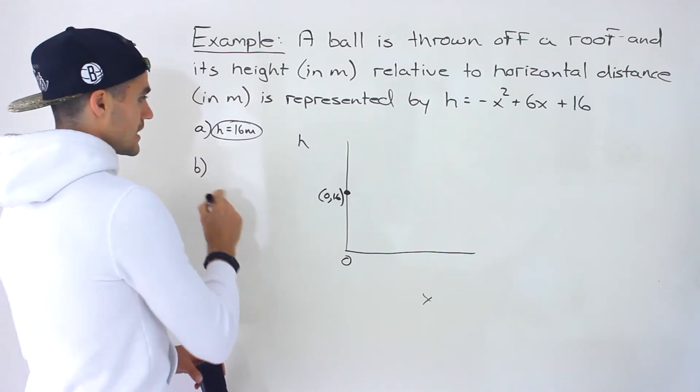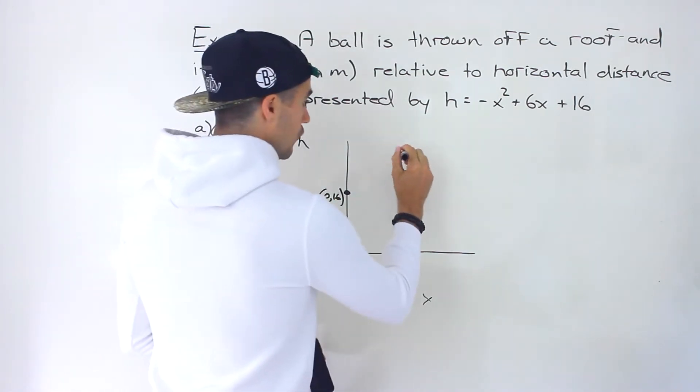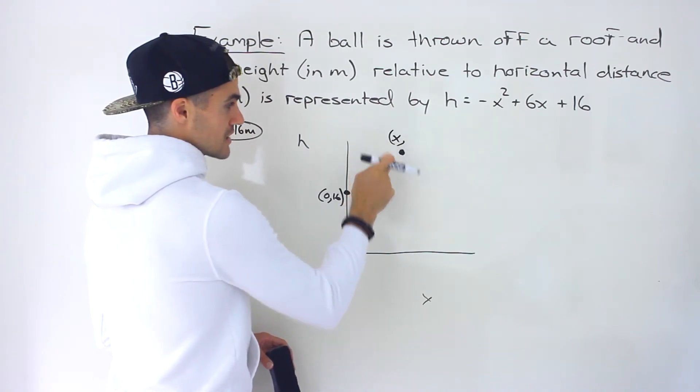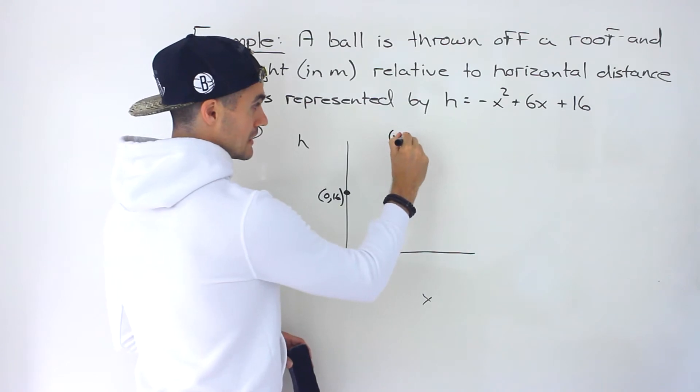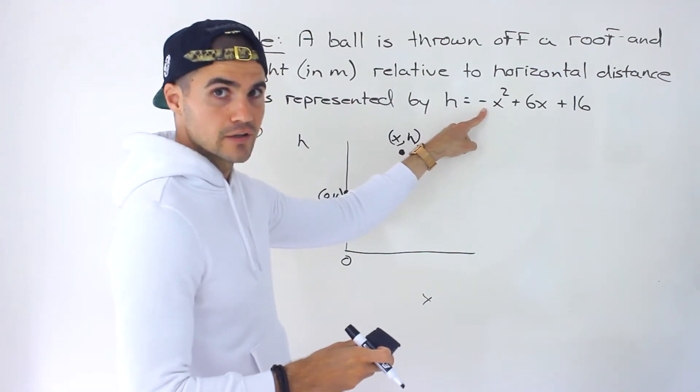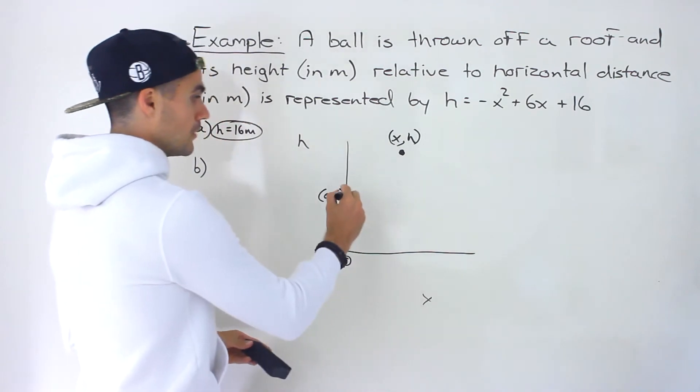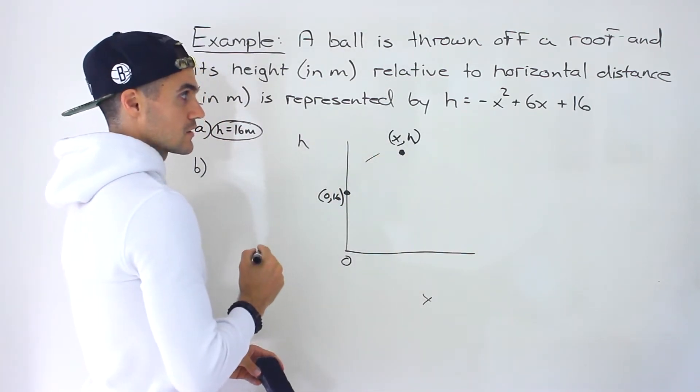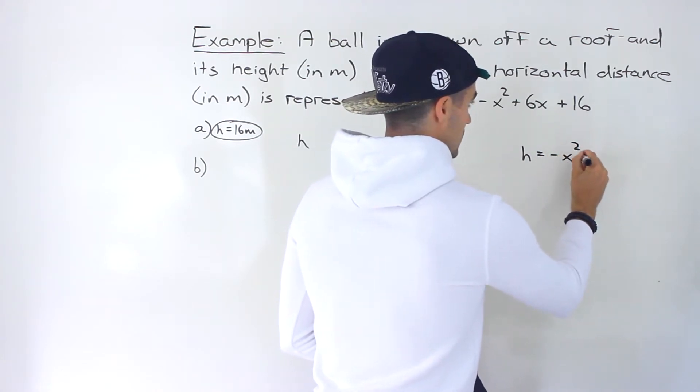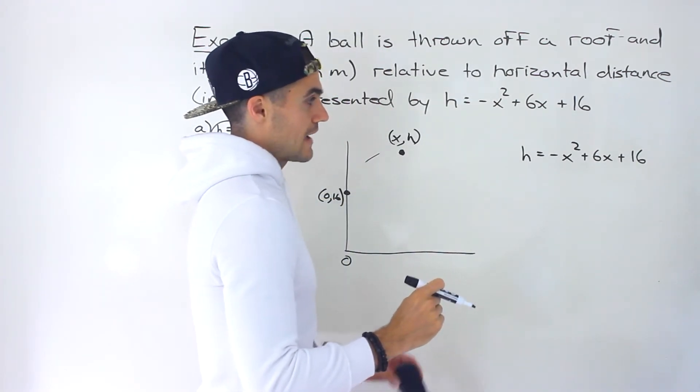Then in part b they're asking what is the maximum height reached by the ball and then at what horizontal distance does that happen? So they're basically asking for the vertex. They're asking for the coordinates of the vertex. The x value of the vertex is going to be the horizontal distance that the max height is reached, and then the h value is going to be the actual max height. And notice that we are going to get a maximum value because we have a negative leading coefficient. So we know this parabola is going to be opening down, which makes sense in terms of the word problem because we're throwing a ball off a roof. It's going to a certain height and it's coming back down to the ground. So different ways we could find this vertex. Let's do it with completing the square.